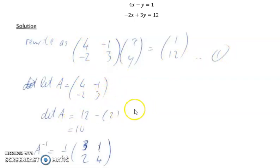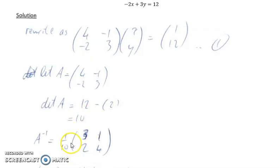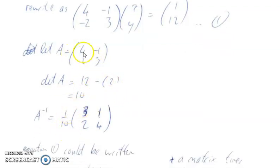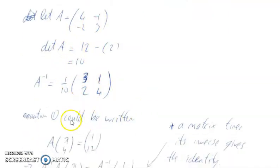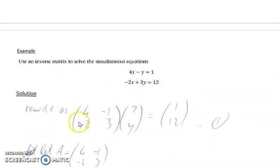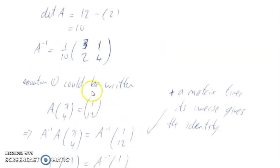We're going to find the inverse of A. First find the determinant. The determinant is the product of the leading diagonal minus the product of the other diagonal: 12 minus 2 equals 10. The inverse is 1 over the determinant, then swap the elements in the leading diagonal. The 4 and 3 swap around, and the 1 and 2 change sign to become minus 1 and minus 2.